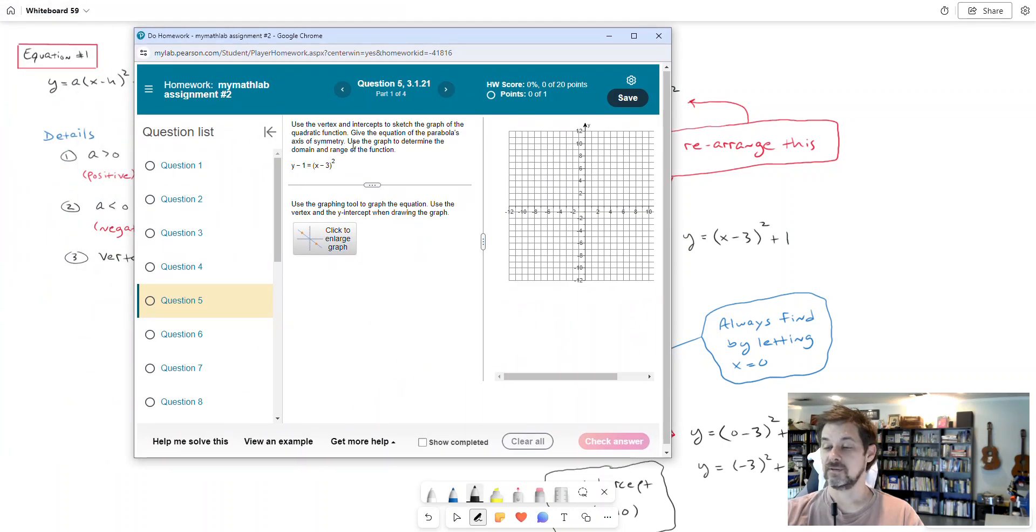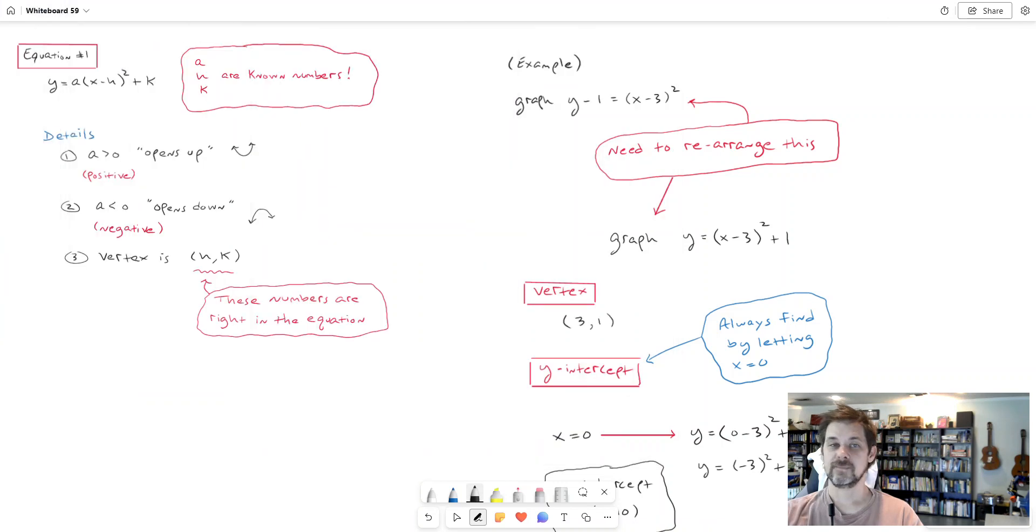See, the equation that I'm given, the function that I'm given is y minus 1 equals x minus 3 squared. That doesn't look exactly like this form that I would refer to, but it looks pretty close. Now with a little rearranging, I can get it to look just like this and proceed to analyze it according to what I have here.